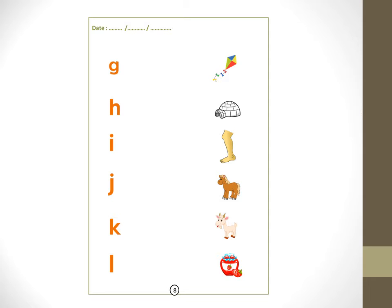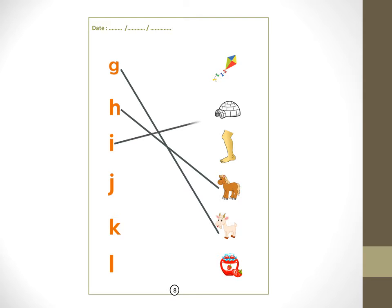Now let's match the letter with the beginning sound with the picture. G, G — goat, super! H, H — horse, yes! I, I — igloo. J, J — jam. K, K — kite.